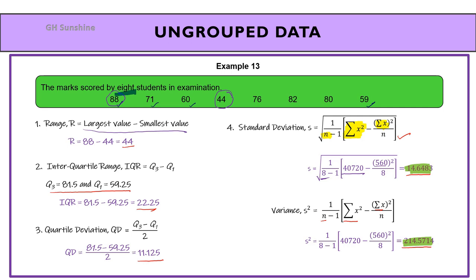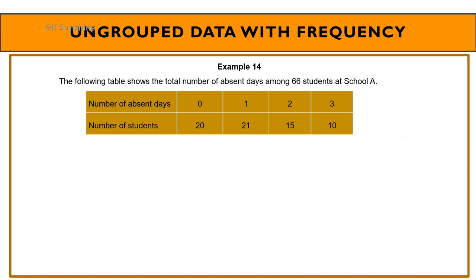Now we focus on measures of dispersion for ungrouped data with frequency. First, range: largest value minus smallest value, same as ungrouped data. Here, x represents number of absent days and frequency represents number of students. The largest value of x is 3 and the smallest is 0, therefore range equals 3.